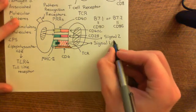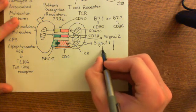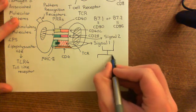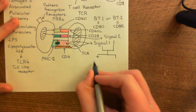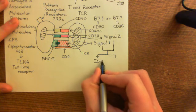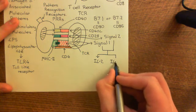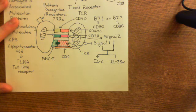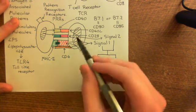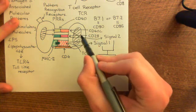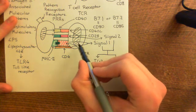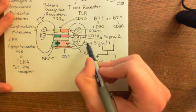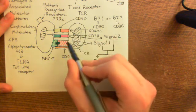Signal 1 and signal 2 cause the T lymphocyte to start making two key molecules: interleukin-2 (IL-2) and the interleukin-2 receptor alpha component. This works through an autocrine signaling loop. The naive CD4-positive T cell, having received signal 1 and signal 2, starts producing and secreting interleukin-2, which then acts back on this exact same cell.